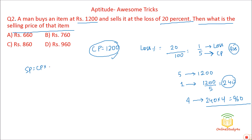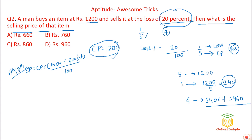Avoid the formula: selling price = (100 ± profit%) / 100. You are not in class 6 anymore — you need to do these calculations mentally. 20% loss → 1/5 → cost price is 5, loss is 1, selling price is 4. Since 5 = 1200, 1 = 240, so 4 = 960. Option D is the correct answer.